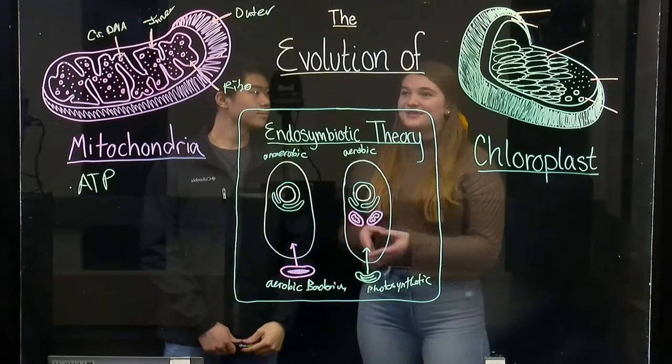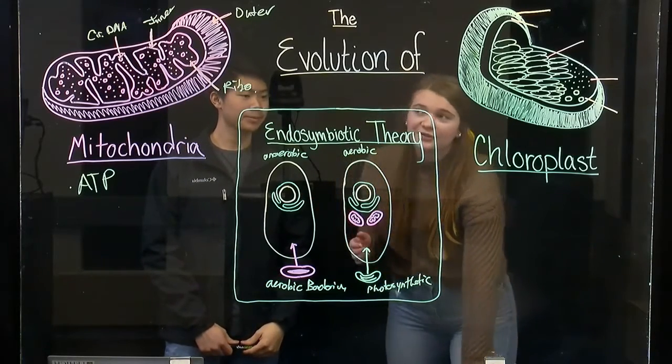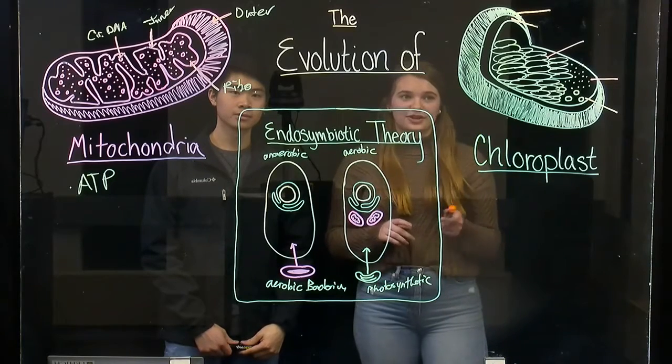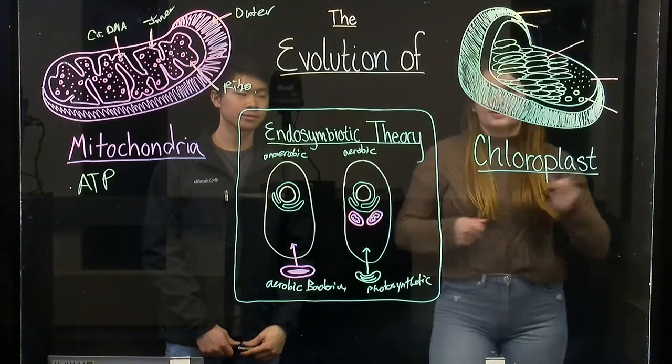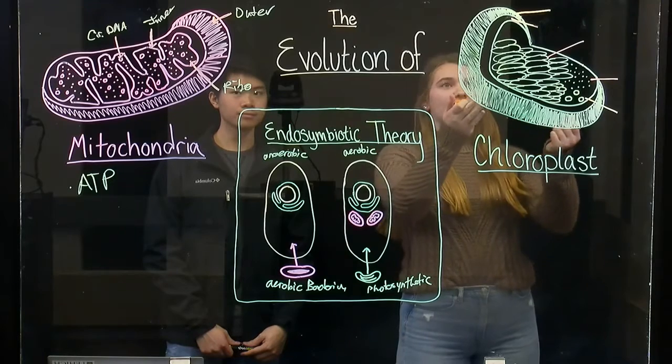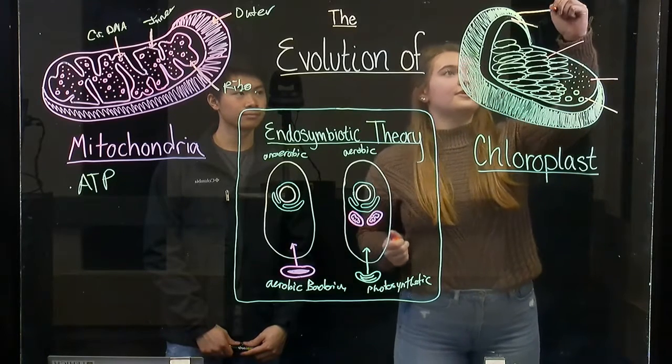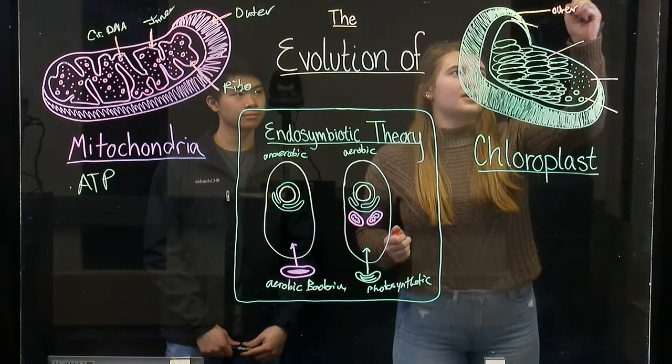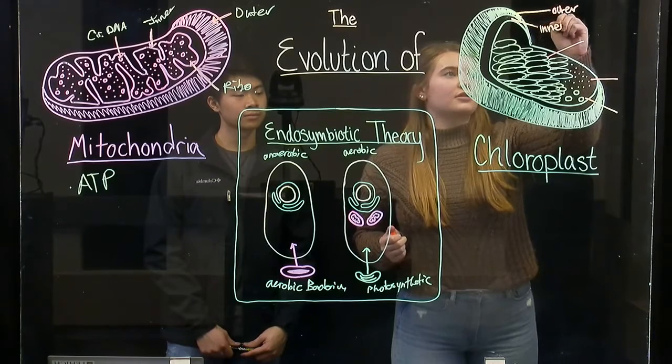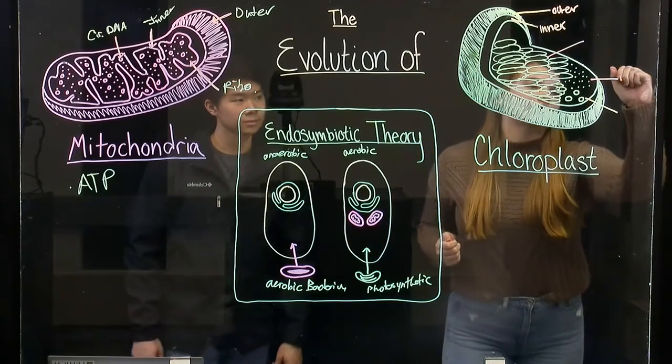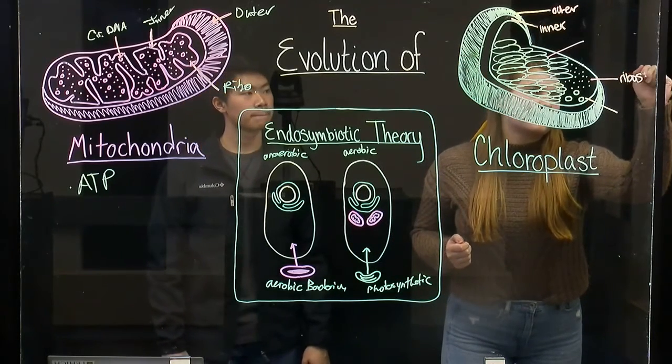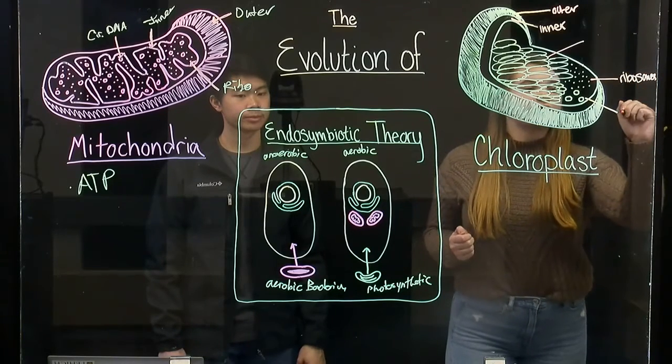Similarly to the mitochondria, the chloroplast also has similar structures to prokaryotes. It's double membrane bounded with both an outer and an inner membrane, it also contains ribosomes, and its own unique circular DNA.